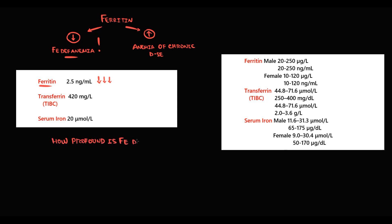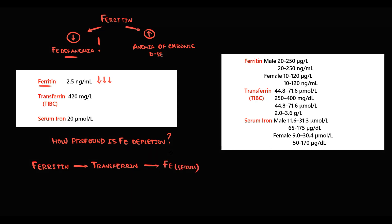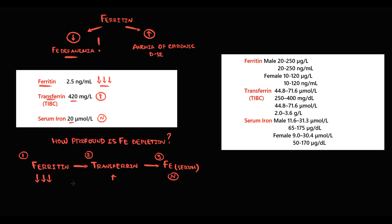Together with ferritin, we also determine transferrin and serum iron. Iron deficiency anemia is the most common microcytic anemia, so every time we see microcytic anemia our first thought is iron deficiency. To assess how profound the iron depletion is, we look at three sequential changes: first ferritin decreases, second transferrin increases, and third serum iron decreases. In this case ferritin is very low and transferrin is high, but serum iron is still normal.